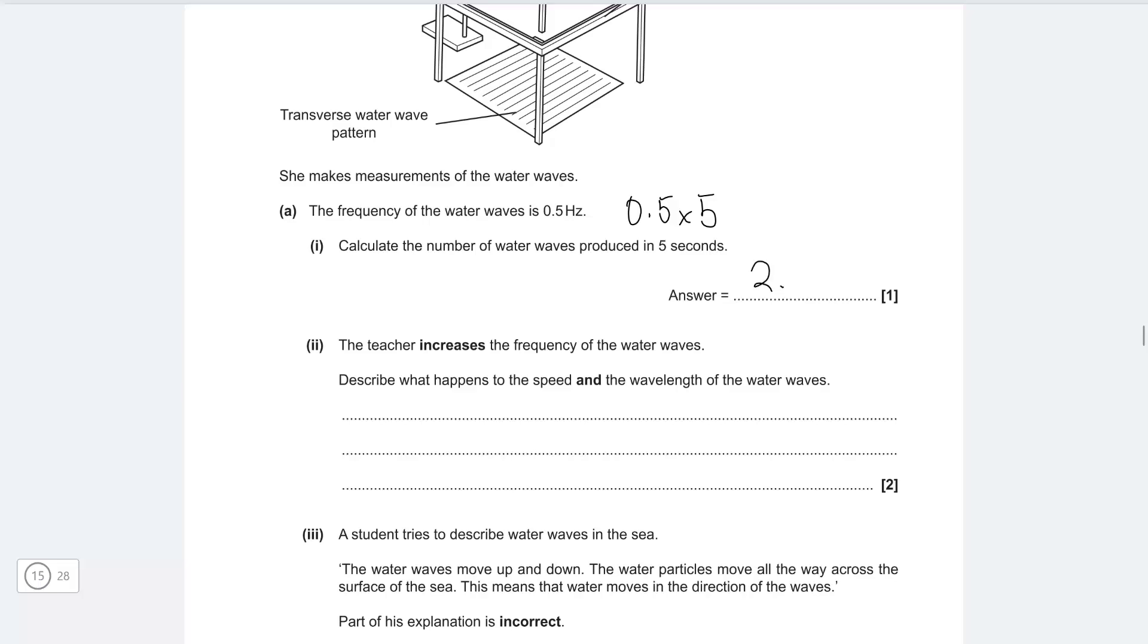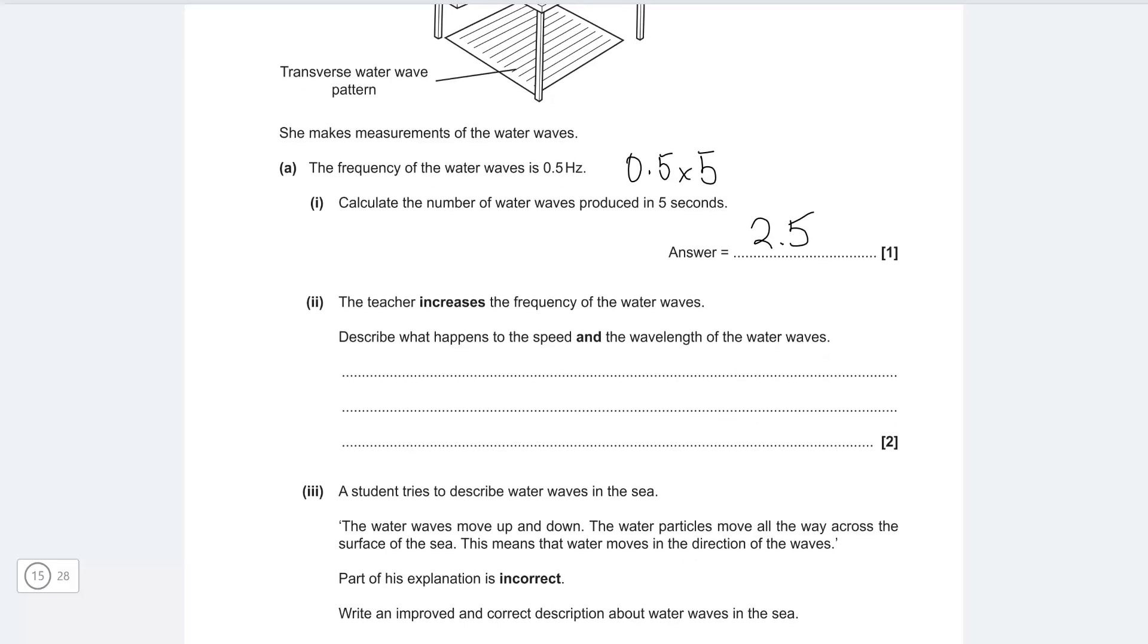The teacher increases the frequency of the water wave describe what happens to the speed and wavelength of the water waves. So for water waves the speed remains unchanged so this is very different to refraction which the speed changes and the wavelength though so because the frequency is increased in order to keep the speed constant the wavelength must decrease like so.